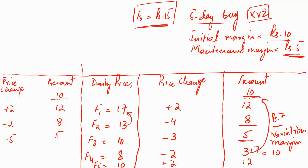When F4 is 8, it's a 7 rupee decrease from the initial day's price, so we write minus 7. Deducting 7 from 10 brings the account to 3 rupees. Since we receive a margin call on day 4, we add the variation margin — but in this method any variation margin is added to the base value, not the current account. We need a variation margin of 7, so instead of adding it to 3 we add it to the base value, bringing the new base to 17. For each coming day we compare the margin account from 17 instead of 10.